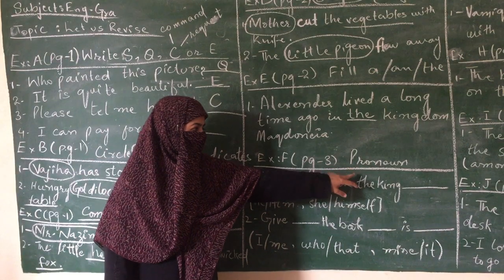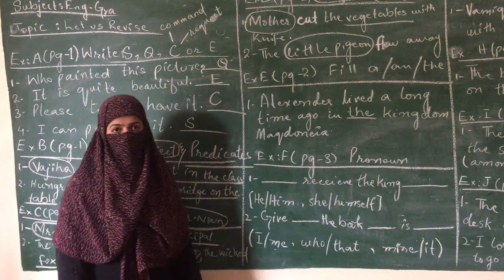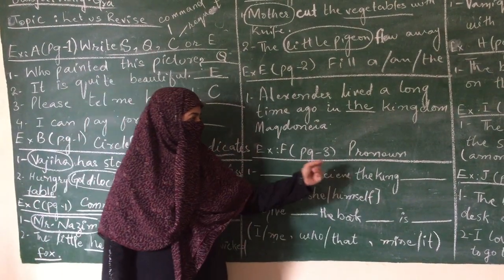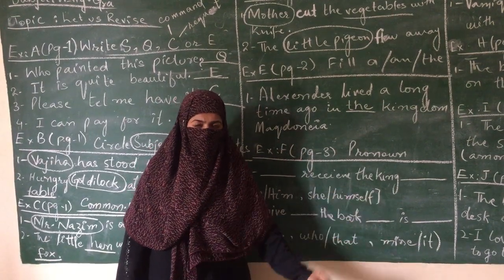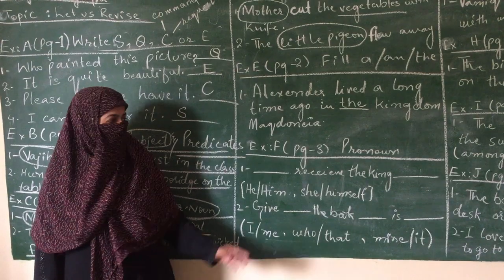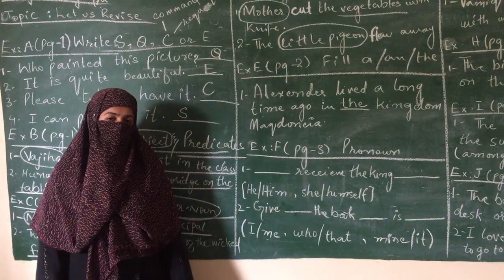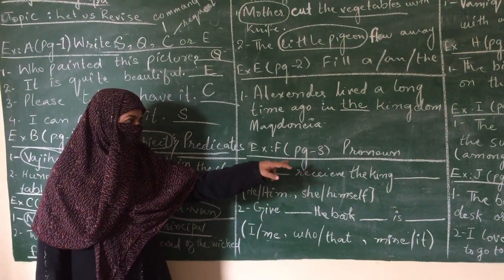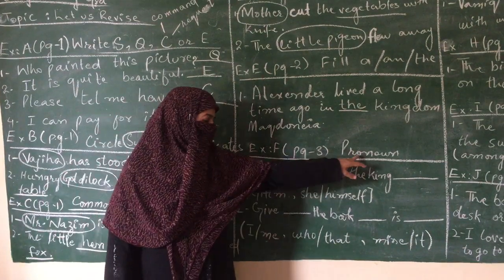Exercise F. We are going to put a pronoun. What are pronouns? The words which we use in place of nouns are called pronouns. Like she, he, it, him, her, they, them. These all words are used in place of noun. That's why we call these words pronouns.